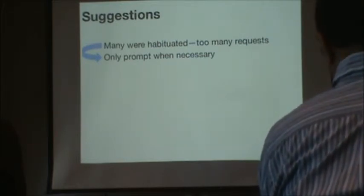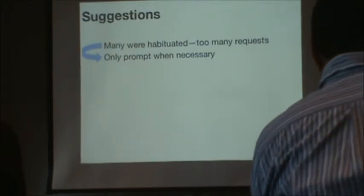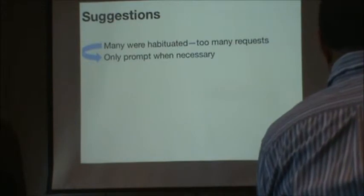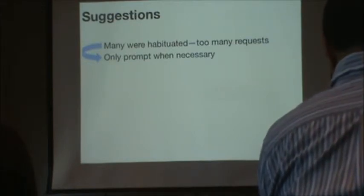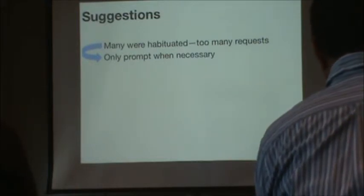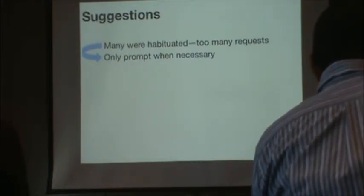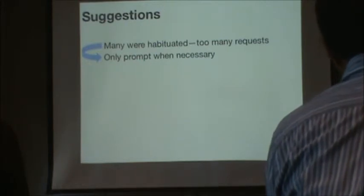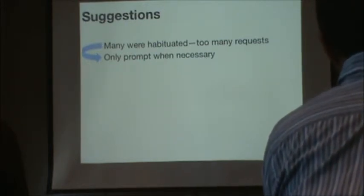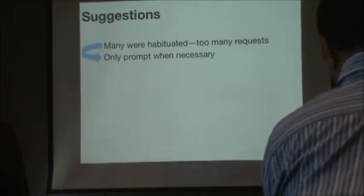From this preliminary study we came up with recommendations for how these permissions could be improved. The most common case was that many people were simply habituated — they said they see these requests all the time, occurring every time they install an app, so they learned not to pay attention to them. The recommendation here is that maybe in certain cases we should only prompt when necessary — for instance, if there's a high risk of something being abused. Many permissions are relatively benign, such as changing the wallpaper. And given that over 90% of applications in the market request internet access, users probably shouldn't see that every time.